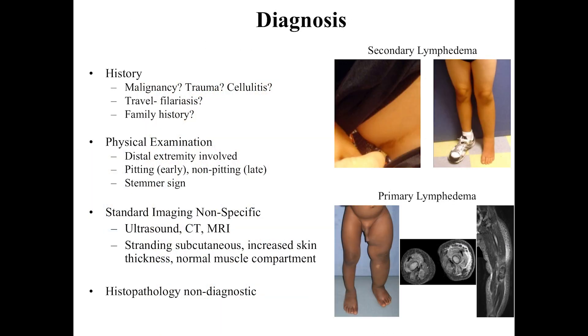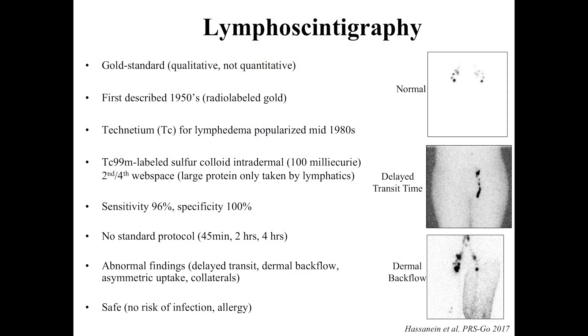How do we diagnose lymphedema? Most patients can be diagnosed by history and physical exam — it's pretty obvious if a patient has breast cancer, had a lymphadenectomy and radiation, and comes in with swelling. Similarly, primary lymphedema with a long family history of passing on the mutation is clear. That said, ultrasound, CT, and MRI are not specific for lymphedema. Signs like subcutaneous swelling and edema were mentioned, and histopathology isn't diagnostic for the disease.